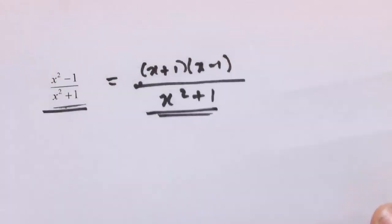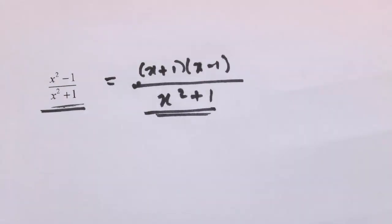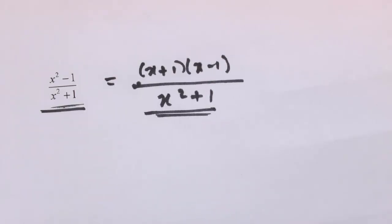So the rules for simplifying algebraic fractions are just the same as for simplifying numerical fractions. You've just got to be really careful that the thing you're cancelling top and bottom — or multiplying or dividing by top and bottom — is really a factor of the expression. And we might need to factorise first in order to find those factors.